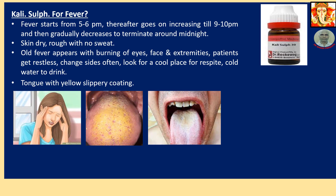Now the remedies. Calisal for fever. Fever starts from 5 to 6 pm, thereafter goes on increasing till 9 to 10 pm and then gradually decreases, terminating around midnight. Skin is dry and rough with no sweat. Fever appears with burning of eyes, face, and extremities. Patient gets restless, changes sides often, looks for a cool place for respite, and desires cold water to drink. Tongue has a white, yellow, slippery coating — the tongue is shown in the image.